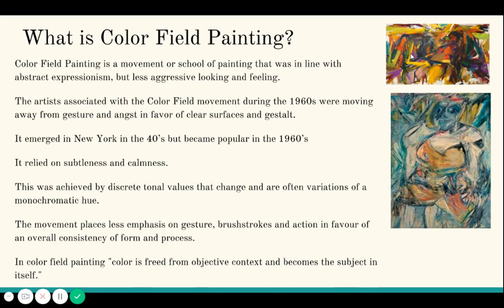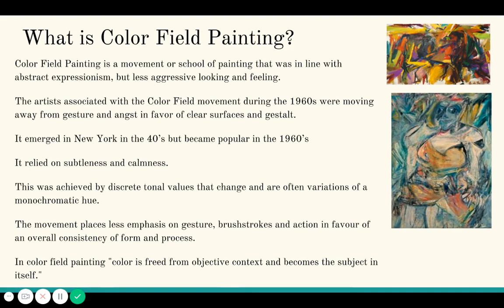With Abstract Expressionism, you can picture the artist making every single mark or line on the canvas because it's really emphasized on that gesture — the movement the artist makes, those hard brush strokes and the action behind them. Color field painters wanted less emphasis on that and more focus on form and process. Color is the focus; it really is a study of color.